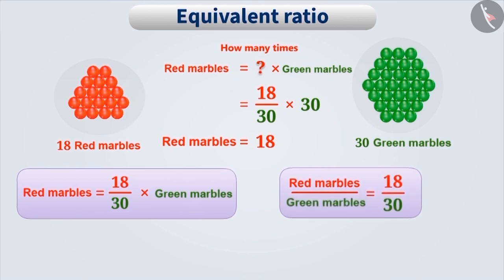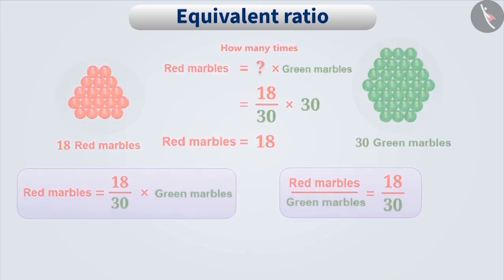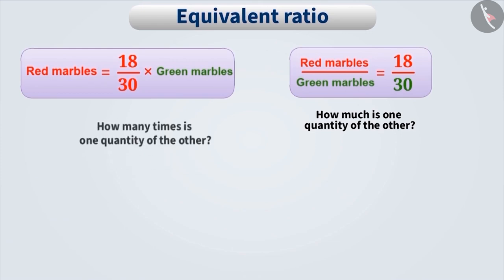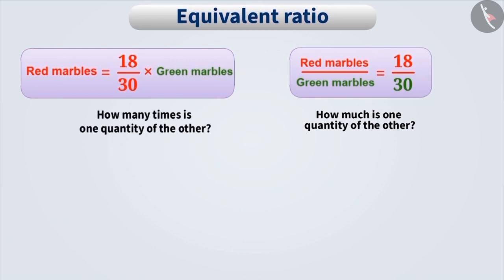Here, we have compared the two quantities — how much is one quantity of the other, or how many times is one quantity of the other. A comparison that tells us that one quantity is how much of the other, or how many times of the other, is called a ratio.